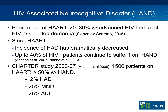Prior to use of highly active antiretroviral treatment, there was about a 20% to 30% prevalence of HIV-associated dementia in those with advanced HIV. Since most of our patients are now on HAART, the incidence of HIV-associated dementia has dramatically decreased. However, the incidence of milder forms of HAND has increased — up to 40% to 50% in some studies. The CHARTER study looked at 1,500 patients on HAART, and over 50% had HIV-associated neurocognitive deficits, though only 2% had HIV-associated dementia; the rest had minor neurocognitive disorder or asymptomatic neurocognitive impairment.